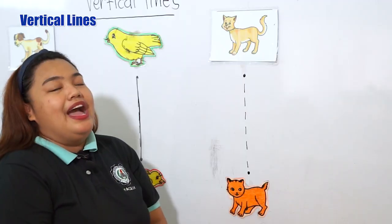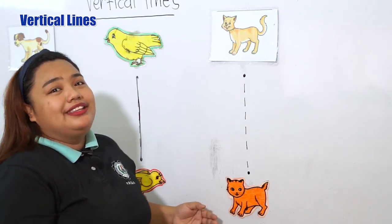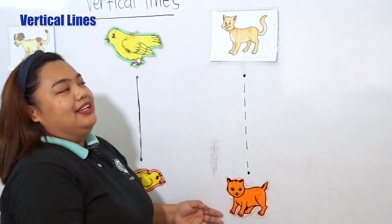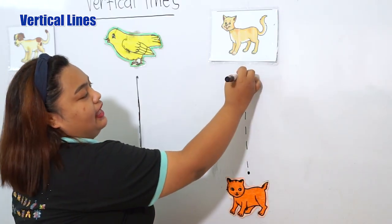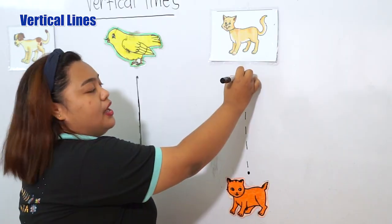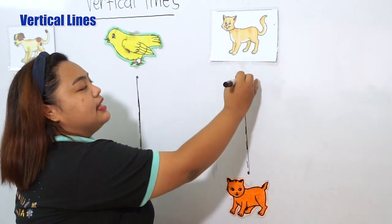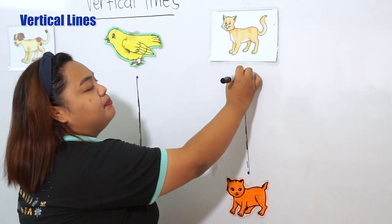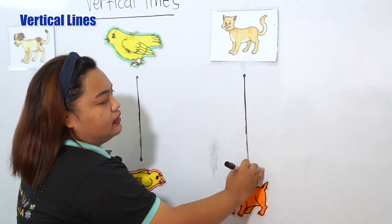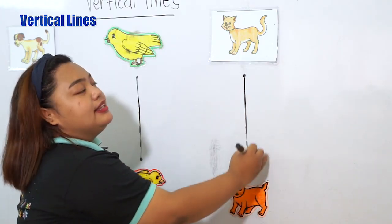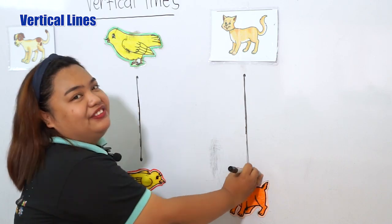And last, let's help the cat find the kitten. Let's trace the broken line — up, going down. Again, up, going down. Again, up, going down.